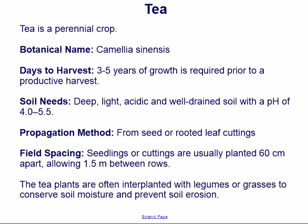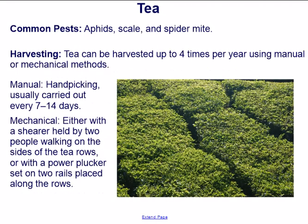Seedlings or cuttings are usually planted 60 centimeters apart, allowing 1.5 meters between rows. Tea plants are often interplanted with legumes and grasses to conserve soil moisture and prevent soil erosion. Common pests include aphids, scale, and spider mite. Tea can be harvested up to four times per year using manual or mechanical methods.